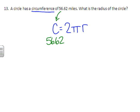Next, number 13. A circle has a circumference of 56.62 miles. What is the radius of the circle? Circumference formula, we can either use pi times diameter or 2 pi r. Because it's asking about the radius, let's use 2 pi r, or 2 times pi times radius. The circumference is 56.62. So I'm going to substitute that in. Pi is 3.14. And radius is just going to stay radius.